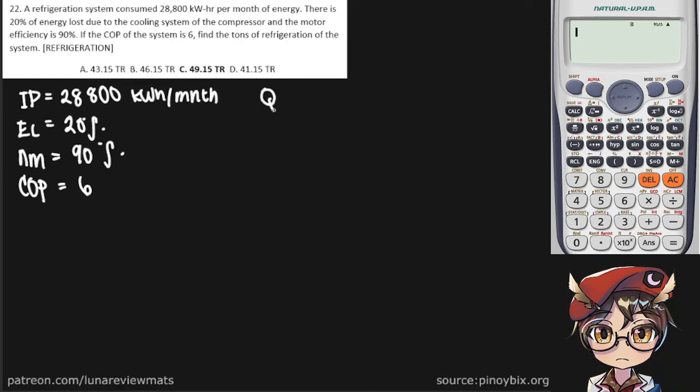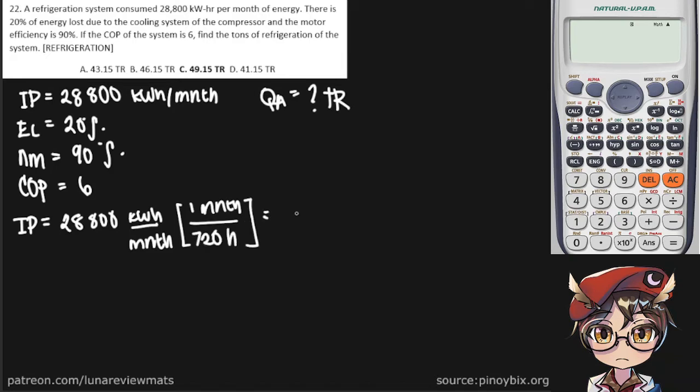In this case is Qa in terms of tons of refrigeration. So first we should convert our indicated power into kilowatts. In a month, there's an average of 720 hours. So we get an indicated power of 40 kilowatts.